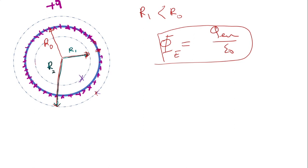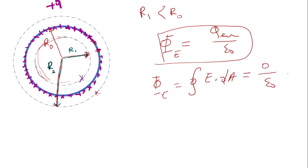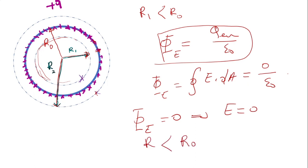We are calculating electric flux for the electric field inside, so our Gaussian surface will be inside. The electric flux will be the integral of E dA, which equals Q enclosed over epsilon zero. In this case Q enclosed is zero, so there is no electric flux and no electric field when the radius is less than the radius of the spherical shell.